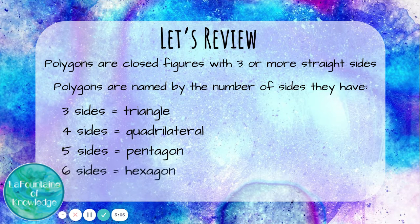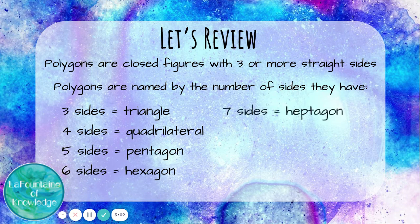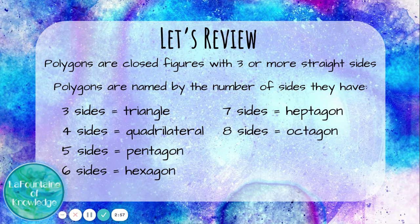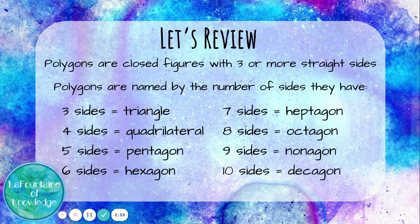Six sides is a hexagon. Seven sides is a heptagon. Eight sides is an octagon. Nine sides is a nonagon. And ten sides is a decagon.